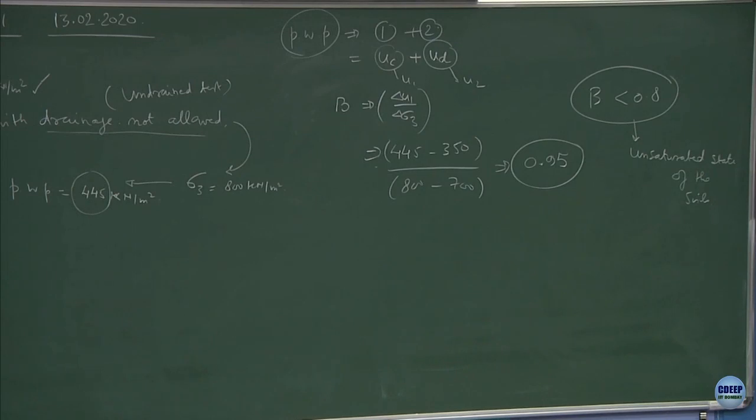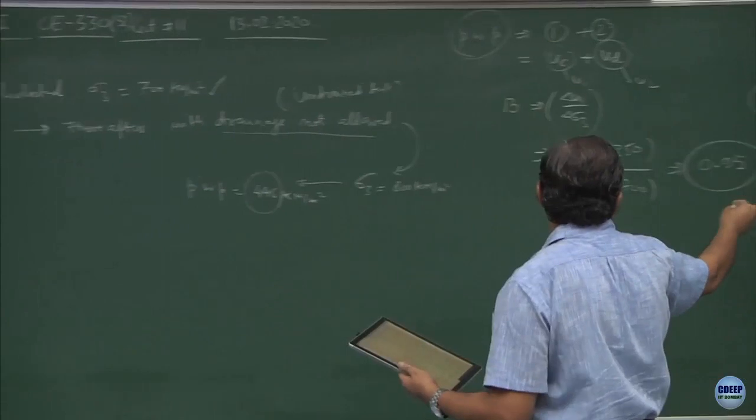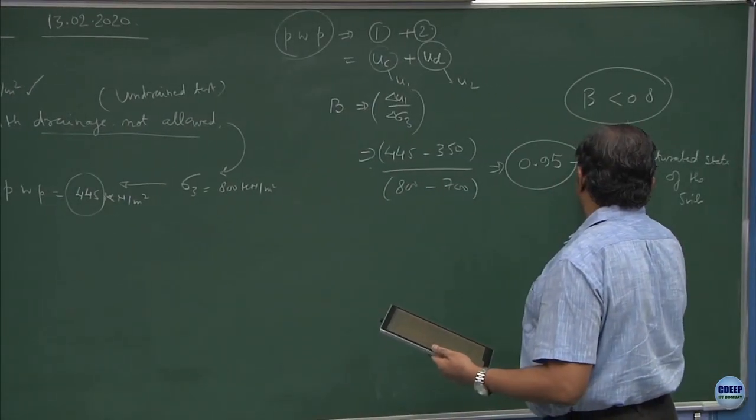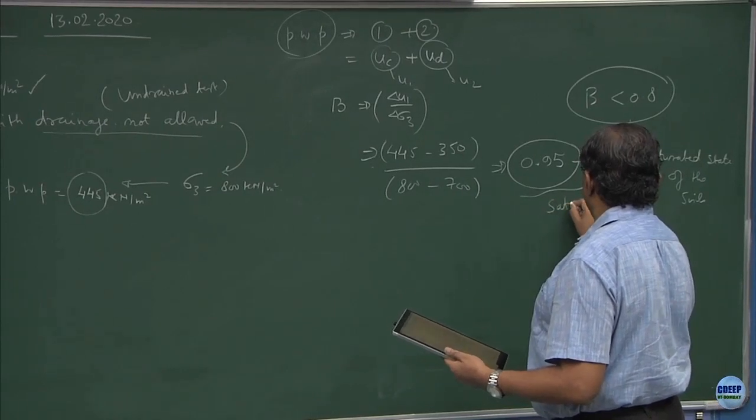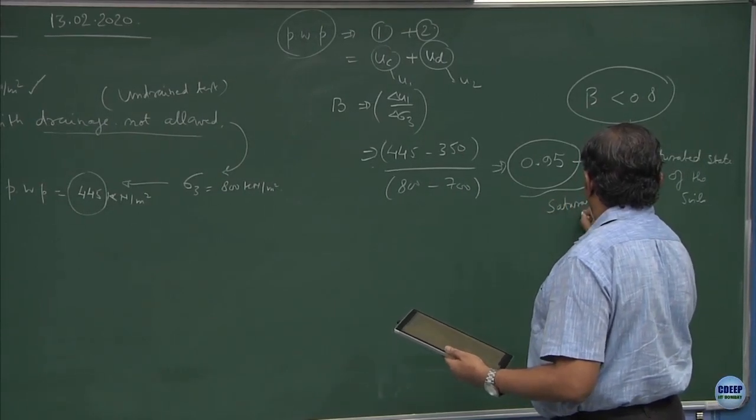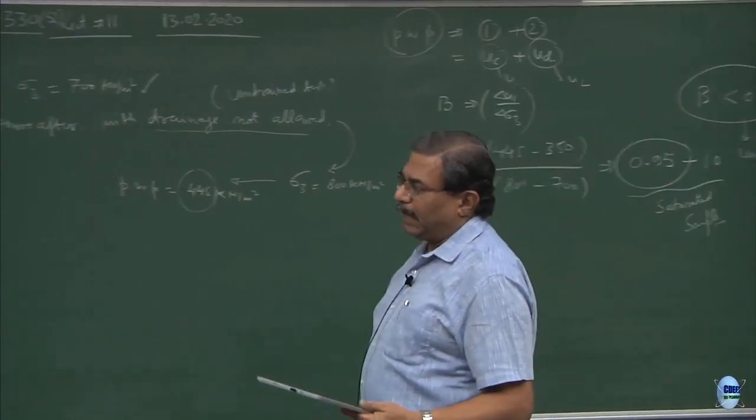By applying back pressure, I have got a B of 0.95. For your information if B drops less than 0.8, it becomes unsaturated state of the soil. Who knows the guy must be aware of this and in order to bring the sample to the saturated state all this has been done. Having done all these things, this corresponds to 0.95 to 1.0 range which corresponds to saturated sample. State of saturation of the sample was achieved by back pressure.